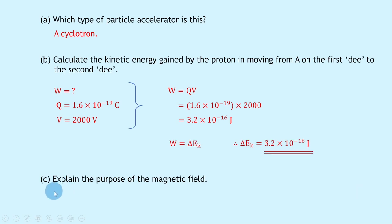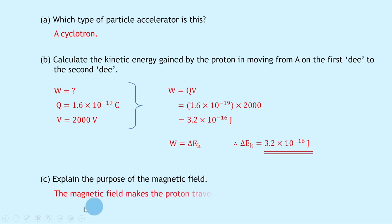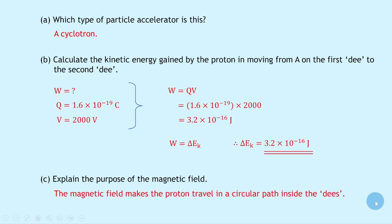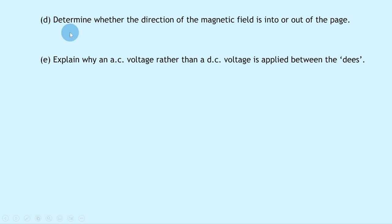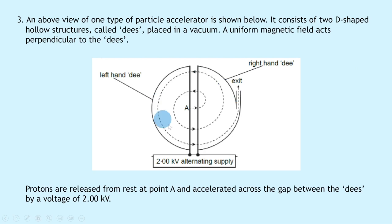Part (c) says to explain the purpose of the magnetic field. The magnetic field makes the proton travel in a circular path inside the Dees. Part (d) asks to determine whether the direction of the magnetic field is into or out of the page. Let's look at the diagram and use the right-hand rule.